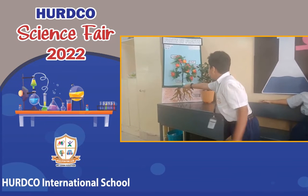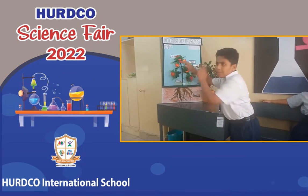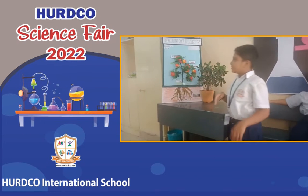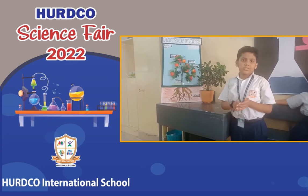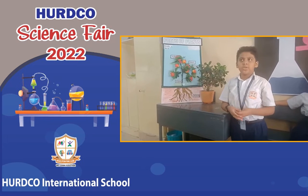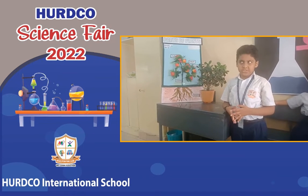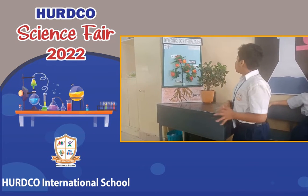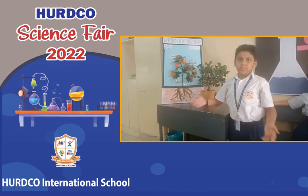Stems carry food to the other parts of the plant. The leaves take in heat and water. This process is called photosynthesis. Photosynthesis helps the plant in producing food.